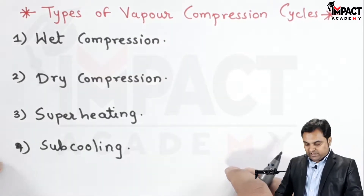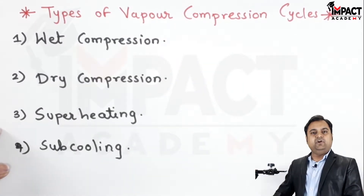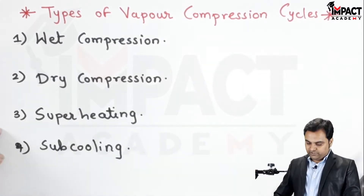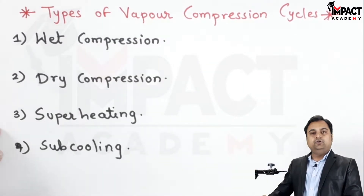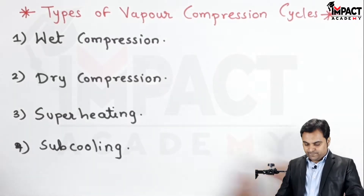These are the four types of vapor compression cycles which we are going to see further, drawing the PH and TS diagram for them.